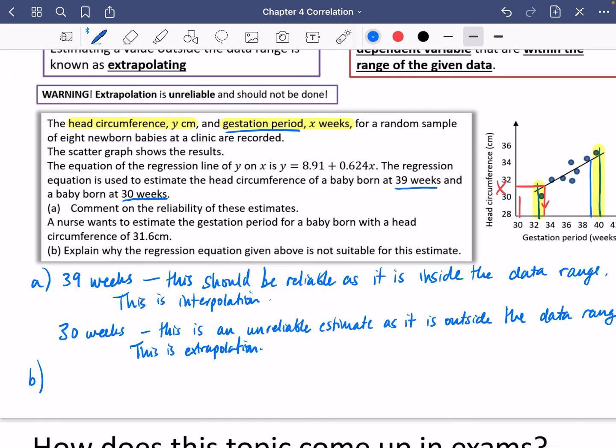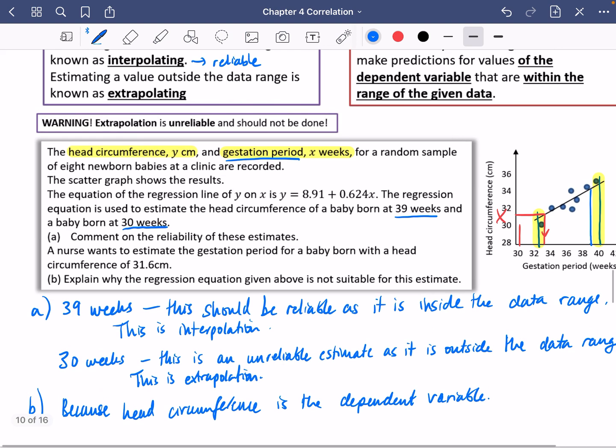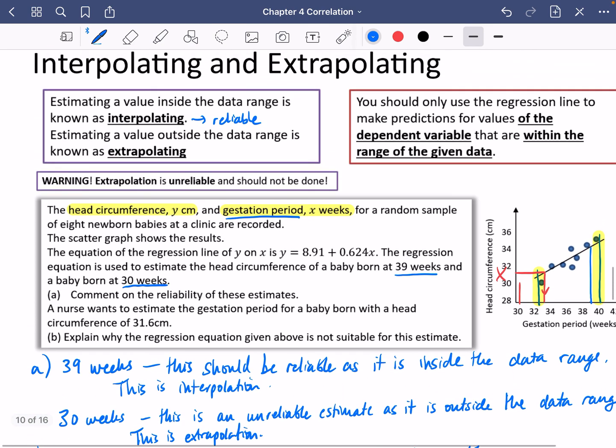So part B, explain why this is not suitable. We should say because head circumference is the dependent variable. Okay, so that's why we shouldn't use the regression equation. We should only be doing it if it's going from the independent variable to the dependent variable. Okay, we're going to try some exam questions on this just now.